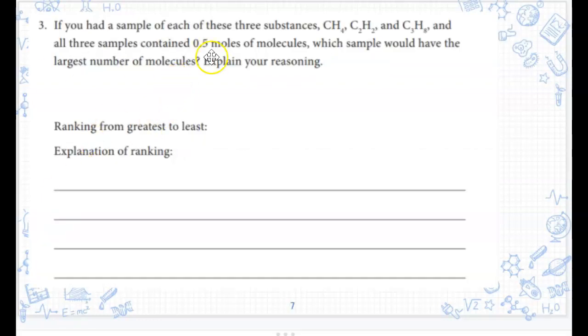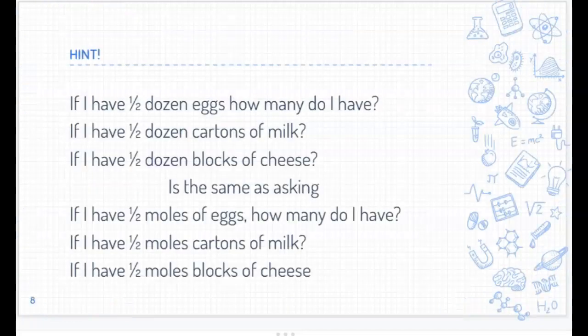What we did here, we felt like kids had a really difficult time seeing moles as a number. Before we gave them the answer, we wanted them to think about this. The number is all the same. Then half a dozen of eggs is six. Half a dozen of cartons of milk is six. Half a dozen blocks of cheese is six. It's the same thing as half a mole of eggs. You're going to have whatever half a mole is.